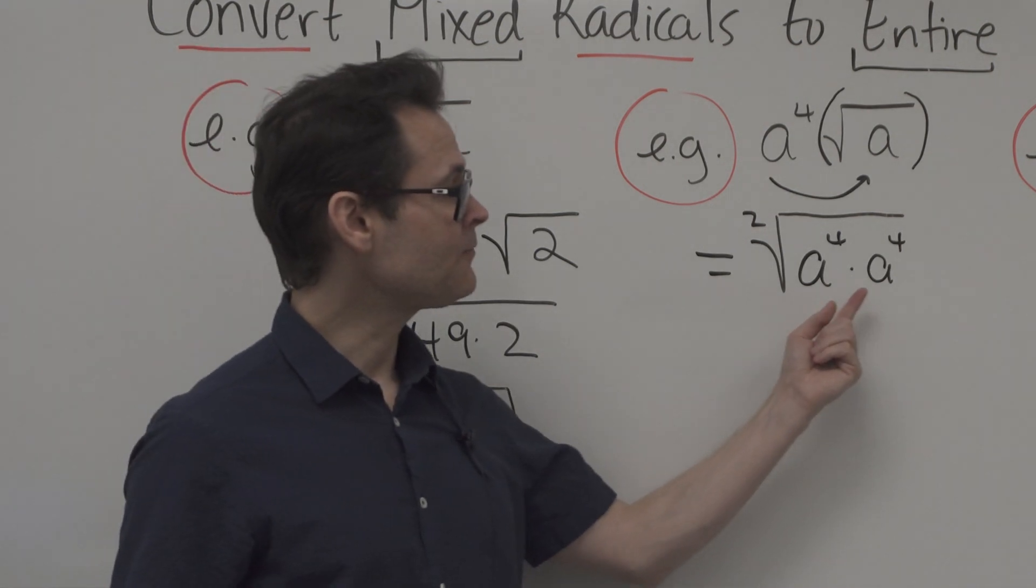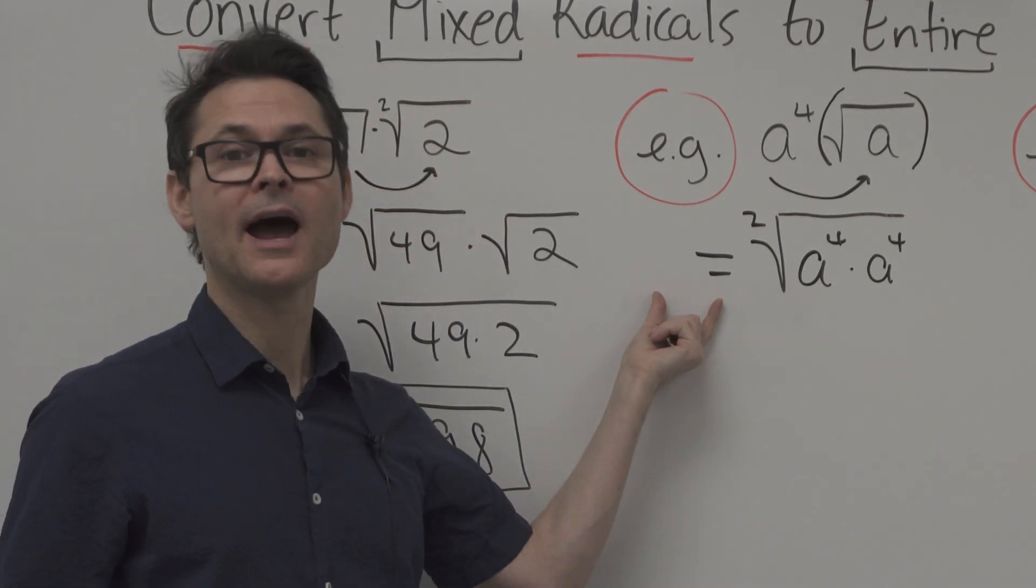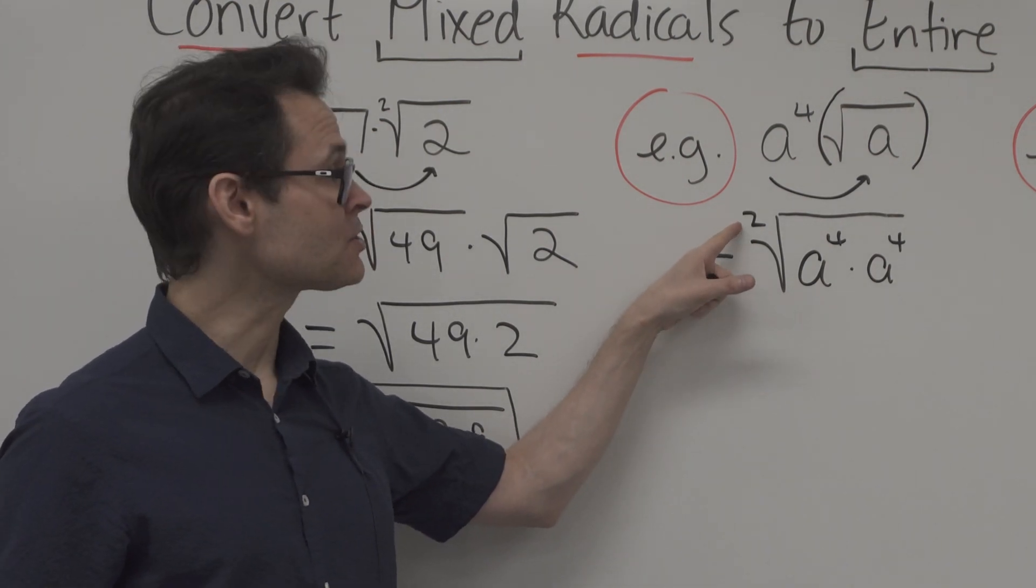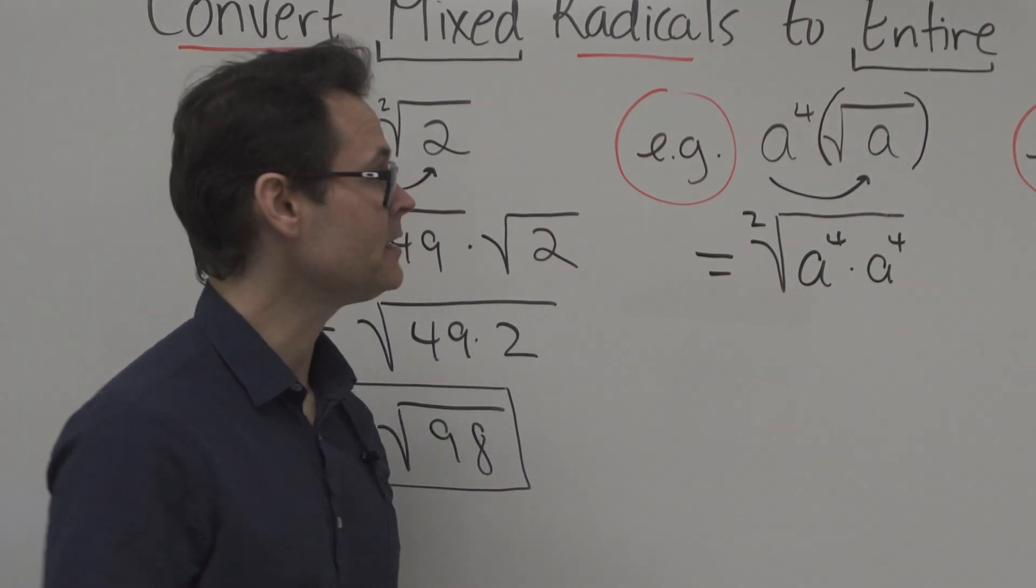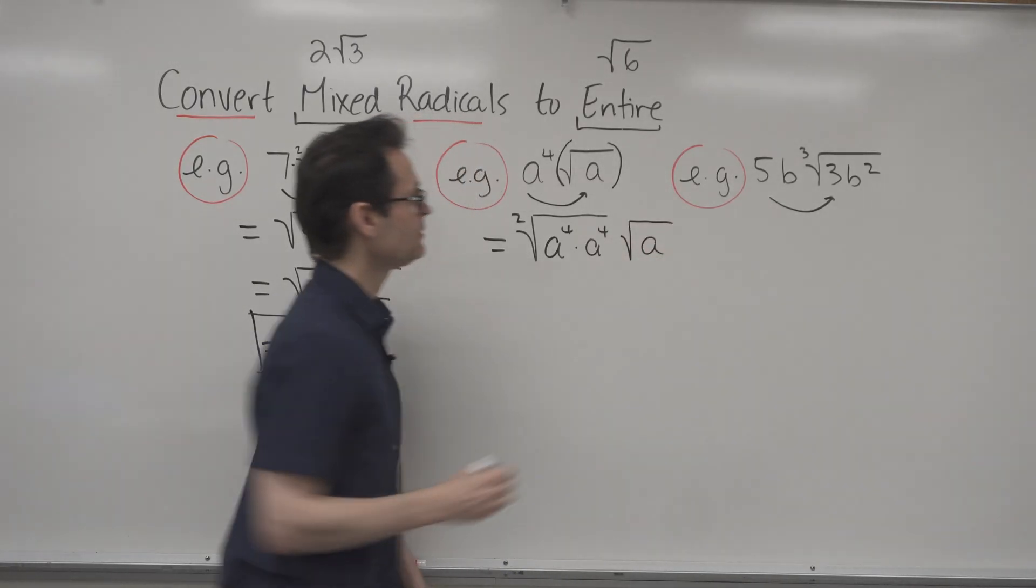So A to the 4 times A to the 4 inside is just A to the 4 outside, because there's an index of 2 for square root. If that was 3, I'd have to put 3 on the inside. And then I already have the square root of A.